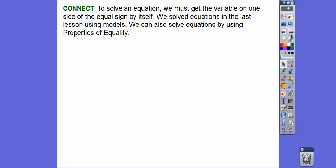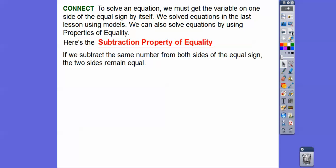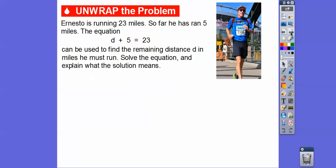We solved equations in the last lesson using our model. We can also solve equations by using the properties of equality - we're going to use the addition property and the subtraction property. Here's the subtraction property: if we subtract the same number from both sides of the equal sign, then it remains equal. Remember, whatever you do to one side you do to the other. For example, if we subtract 4 from both sides, 4 minus 4 is 0, so we have 3 plus 0, and 7 minus 4 is 3, so 3 equals 3.